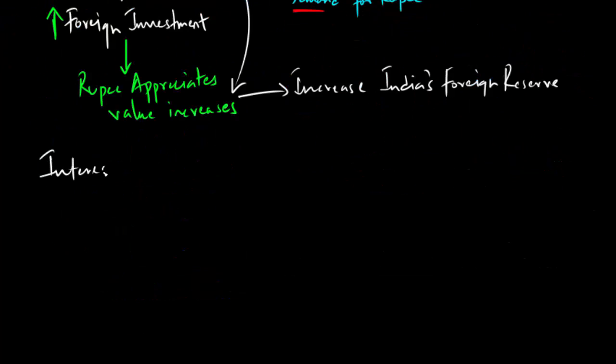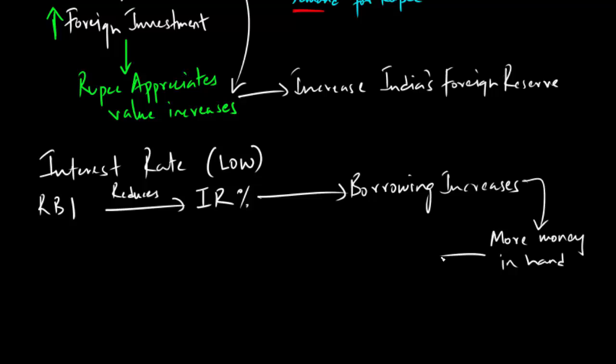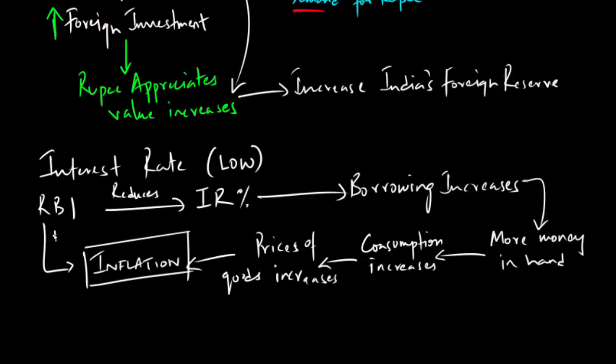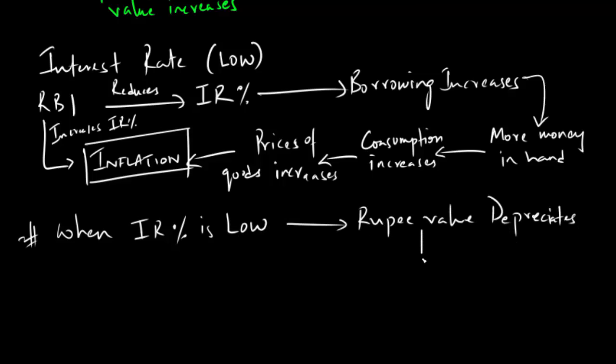Now, the same is not true when interest rates are low. When RBI reduces interest rates, then people borrow more money. That means people have more money in their hand to spend, or in other words, they have more disposable income. And if you have more money in your hand, then prices of goods and services increase. And that leads to inflation. So to control inflation, RBI increases the interest rate. So that means the value of rupee depreciates or reduces when interest rate is low. And if the value of rupee depreciates, then foreign investors do not find it lucrative to invest. And that reduces the inflow of foreign capital. So we can conclude by saying that inflation decreases the value of rupee and doesn't help us in increasing our foreign reserve.